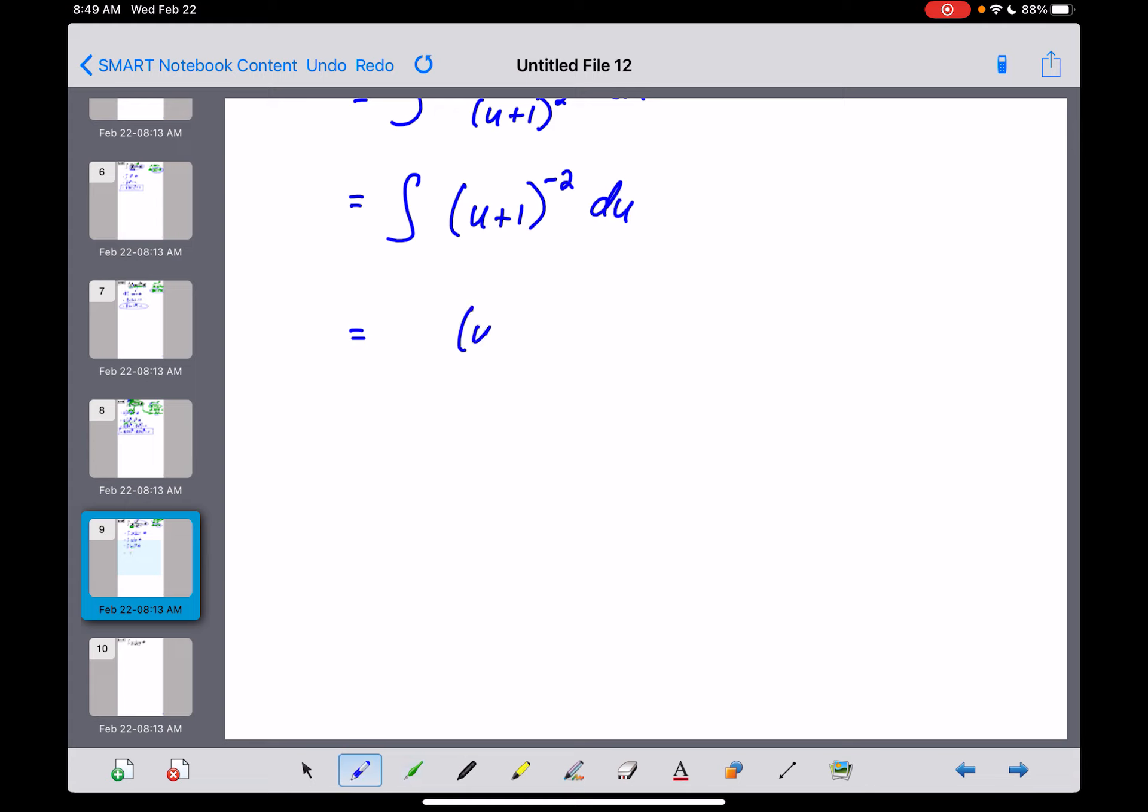Let's keep our base the same, u plus 1. Let's raise the exponent by 1, because we're anti-differentiating, to negative 1. Let's divide by that new exponent. That puts a negative out in front. And we would also divide by the derivative within, but that's just 1 as well. So that's our anti-derivative.